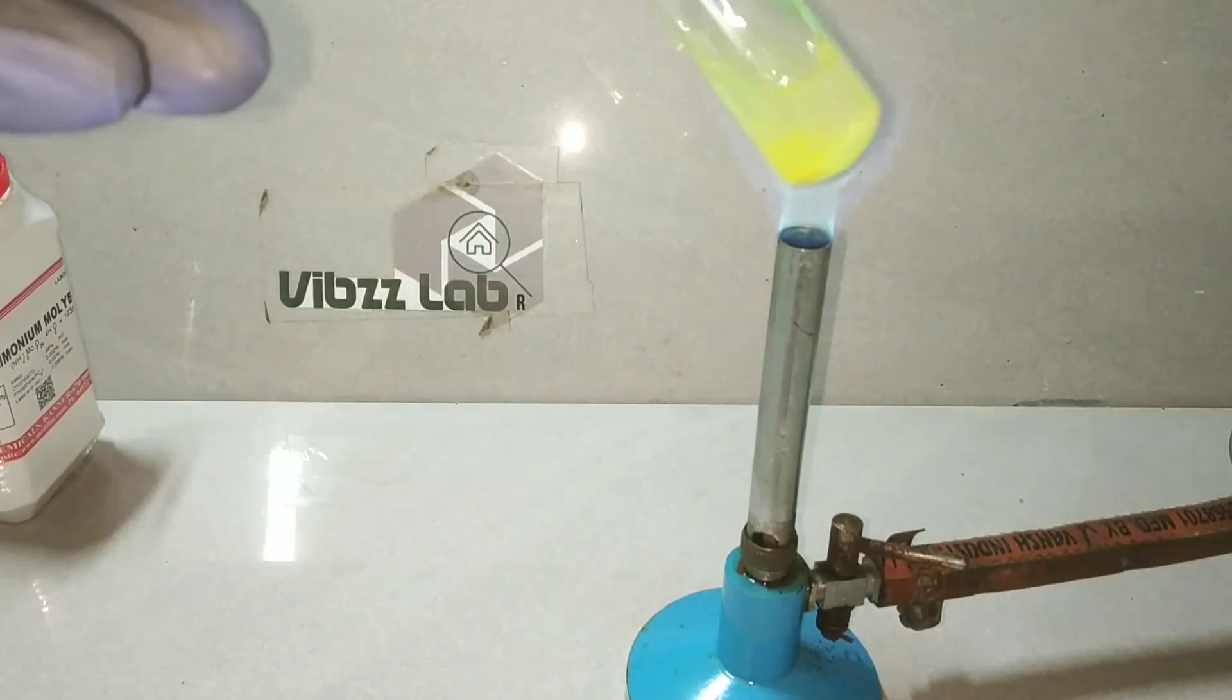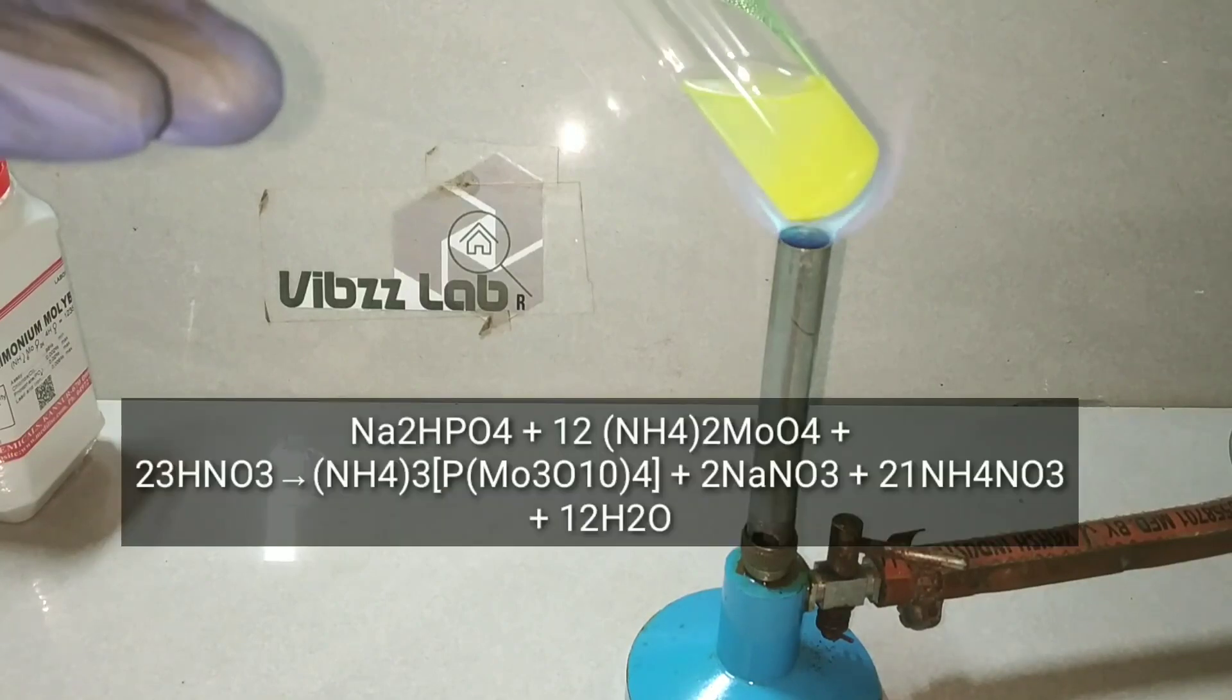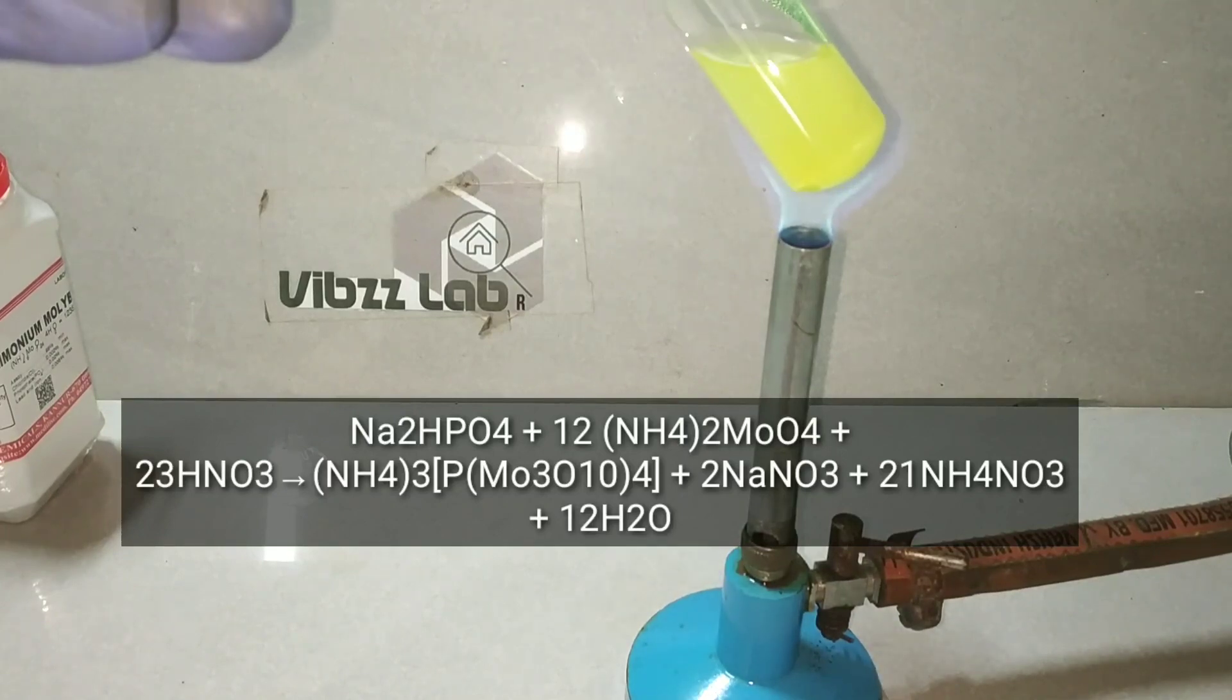What is happening here is that ammonium molybdate reacts with disodium hydrogen phosphate in the presence of nitric acid, forming ammonium phosphomolybdate, which has the canary yellow color to it.